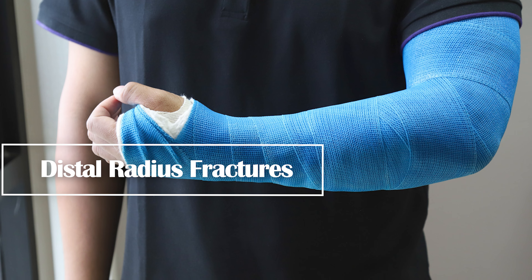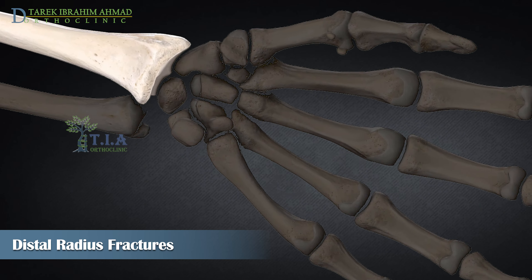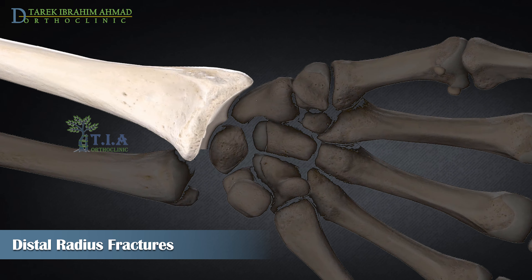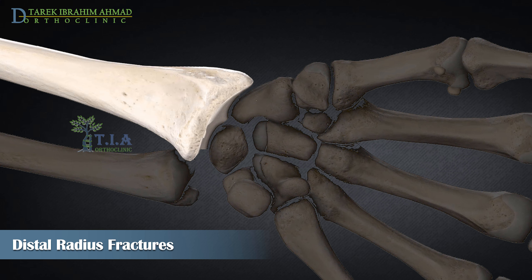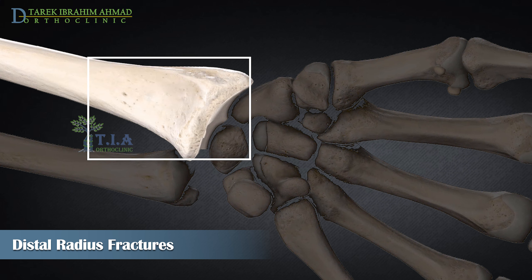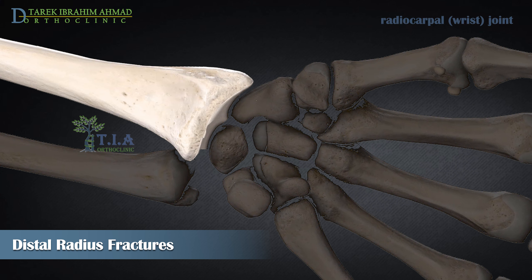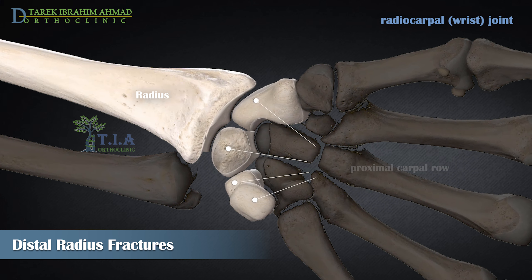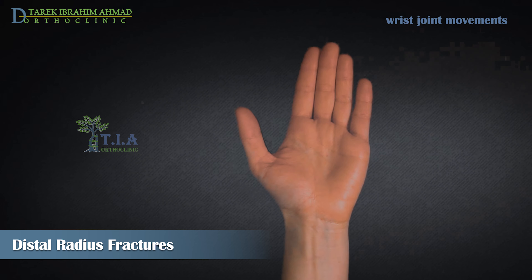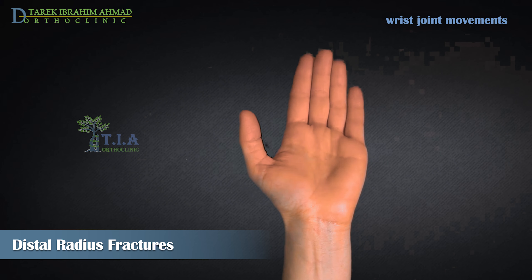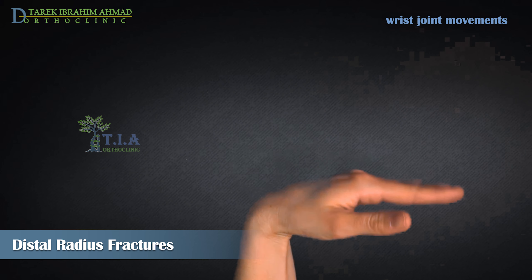There are two bones that make up the forearm. The ulna is on the small finger, or pinky, side. The radius is on the thumb side of the forearm. The end portion towards the wrist is referred to as the distal end. The wrist joint is formed by the radius and a set of four small bones in the wrist, collectively known as the proximal carpal row. This joint is primarily responsible for allowing motions in multiple planes.